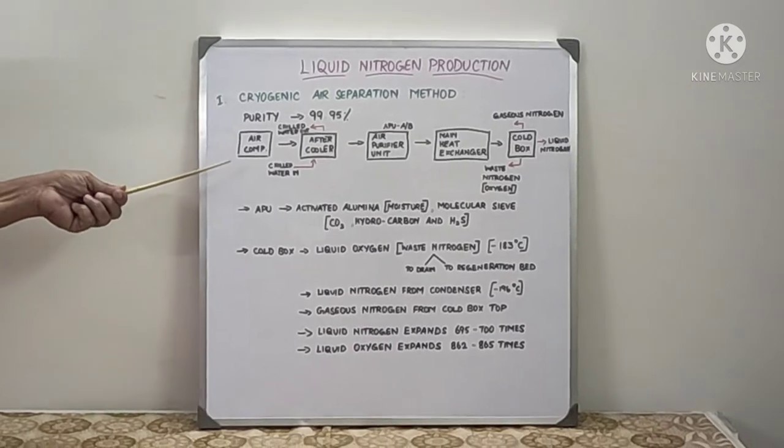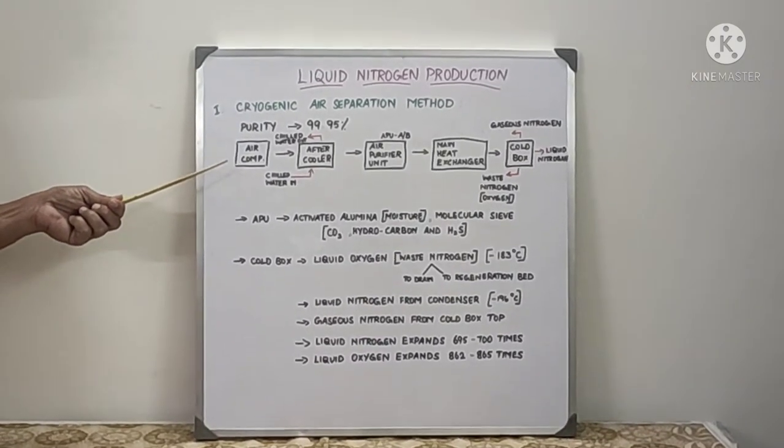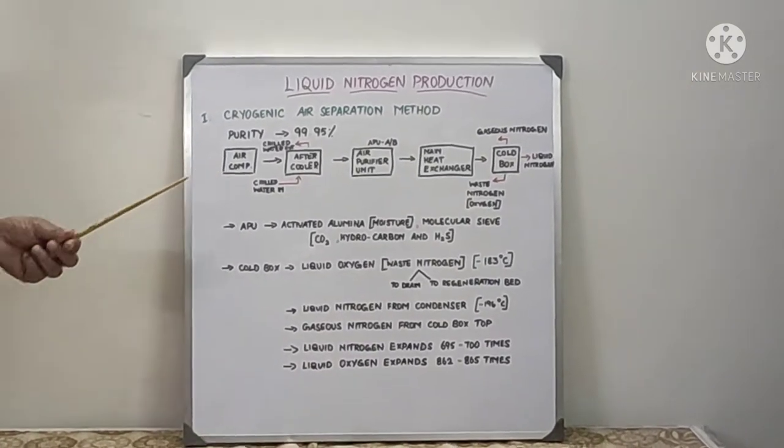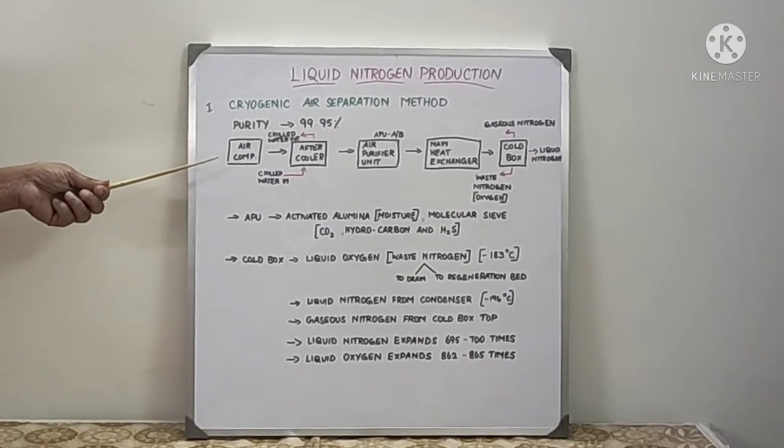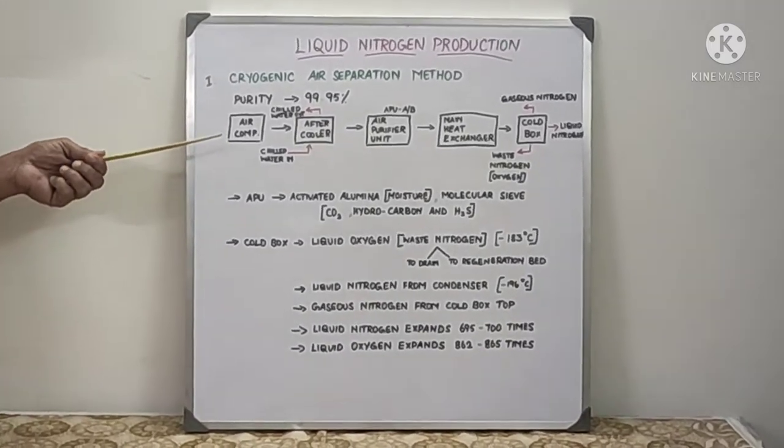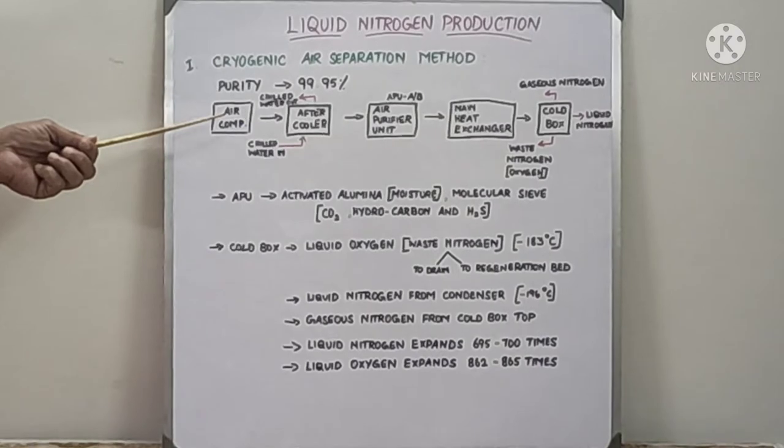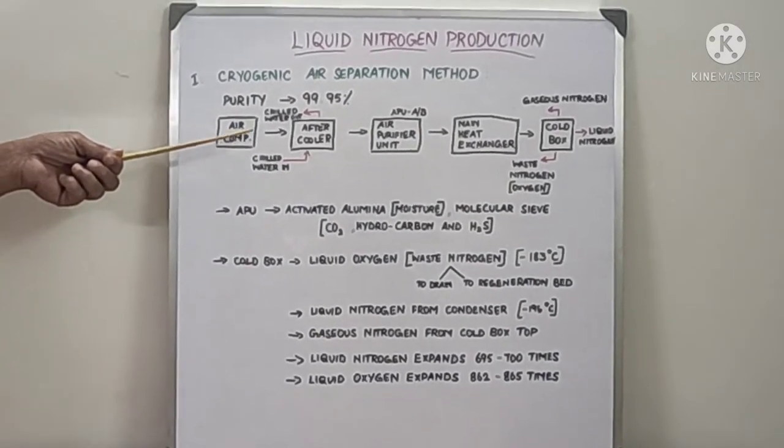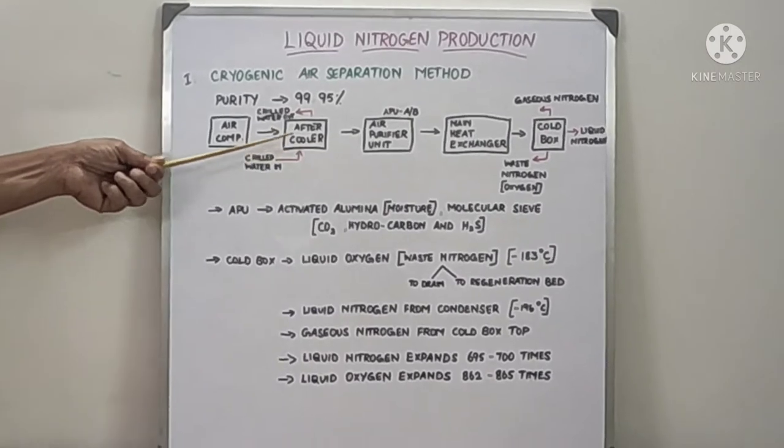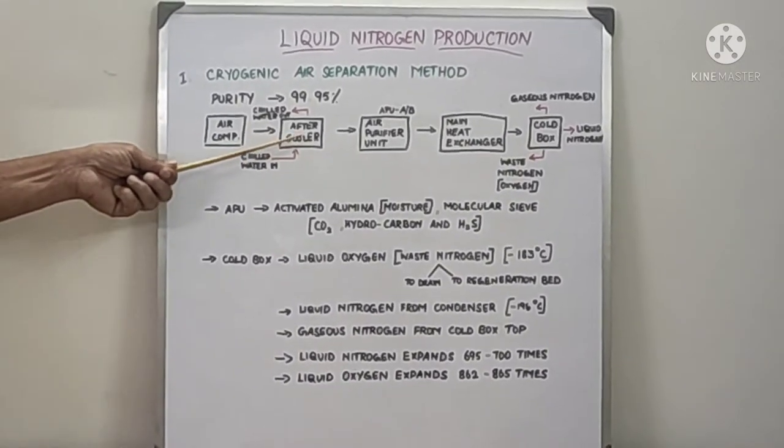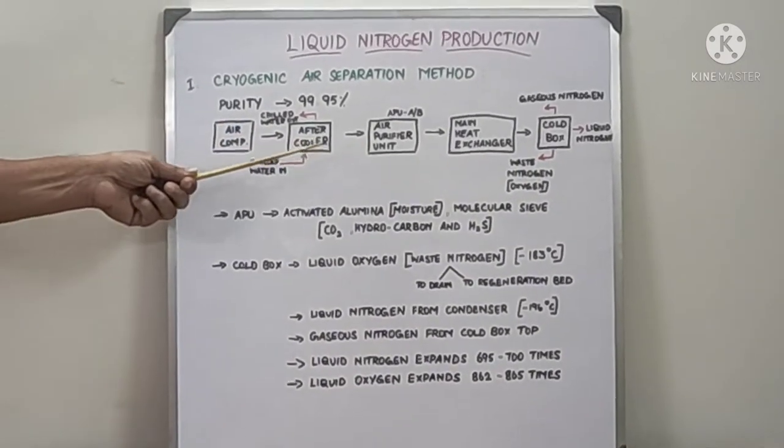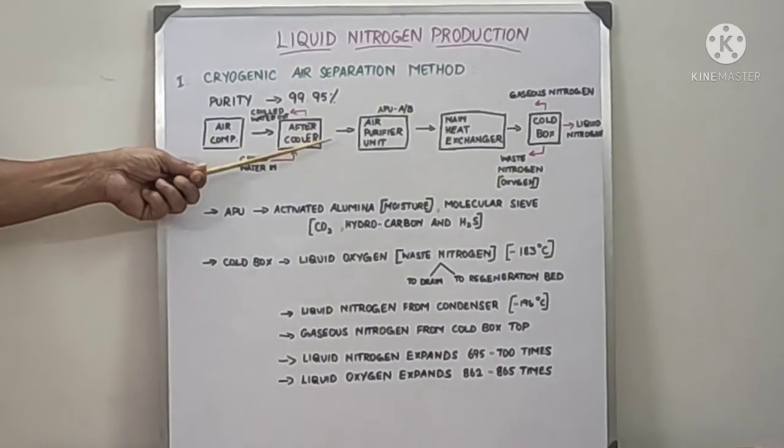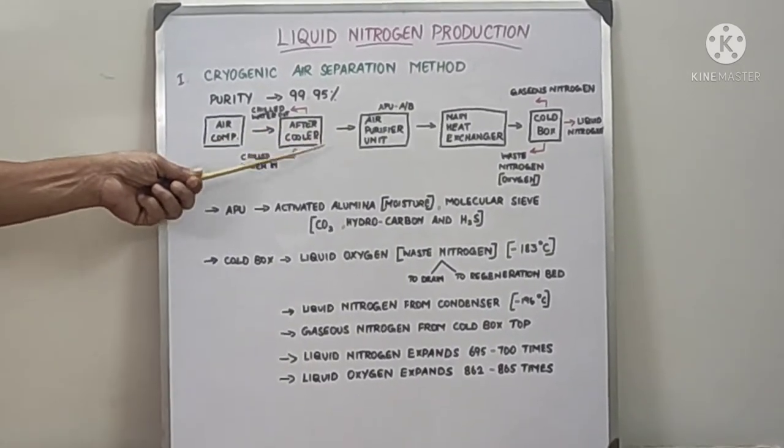Normally centrifugal compressors are used. We can use reciprocating compressor also. From the reciprocating compressor, air is compressed and cooled in the aftercooler. After the compressor, it comes to the chilled water cooler where the temperature will be reduced to around 15 to 20 degrees Celsius and moisture will be removed.